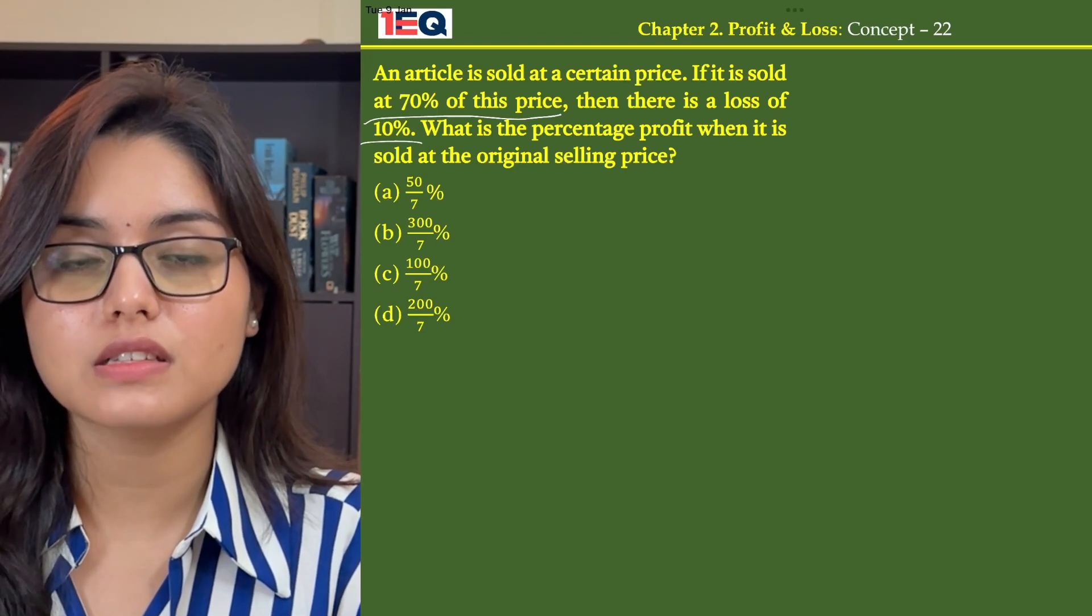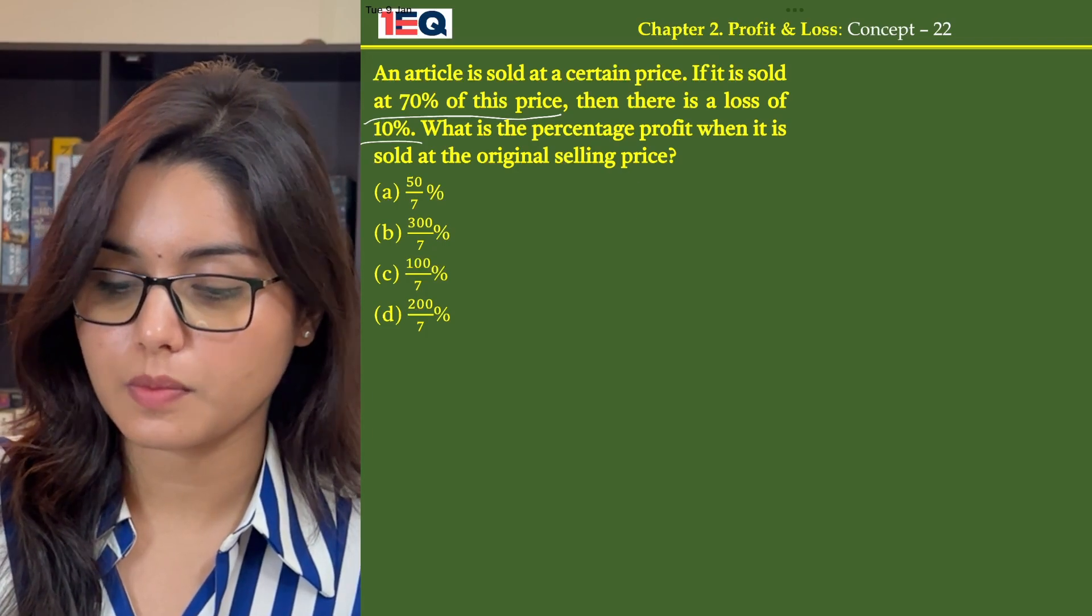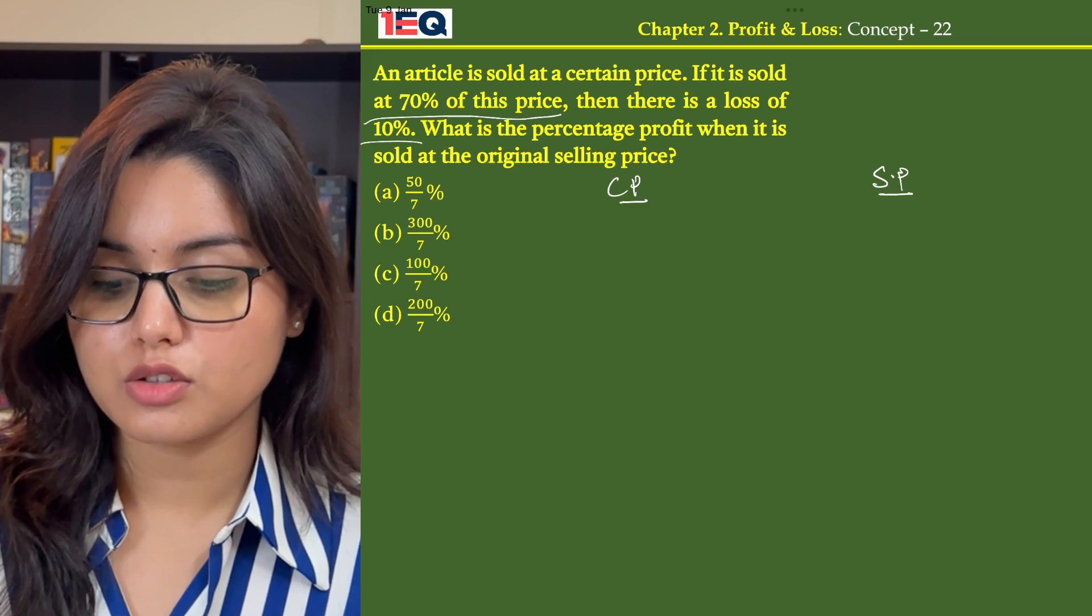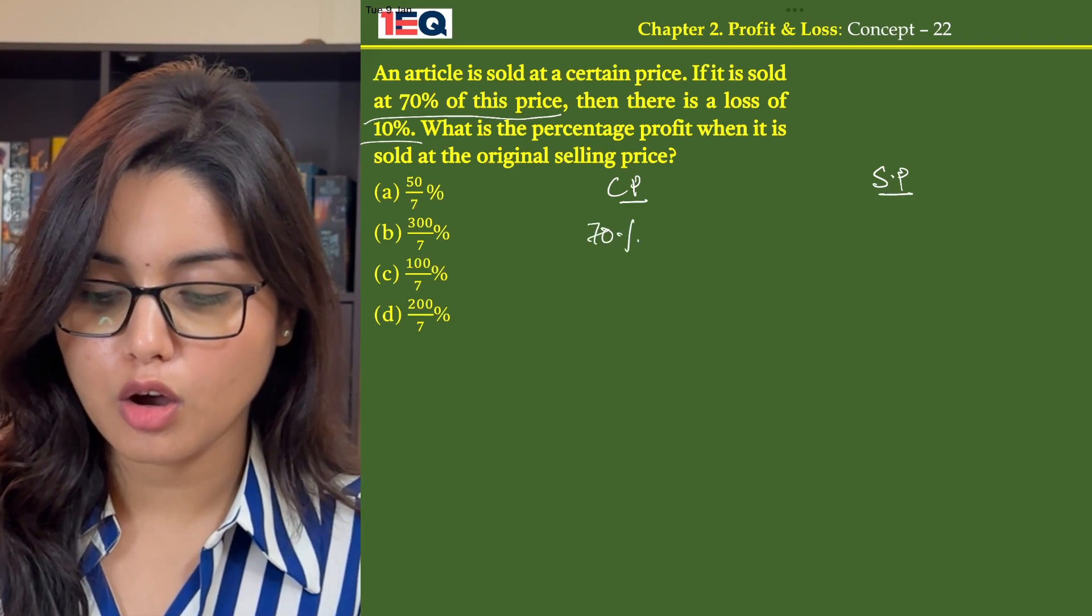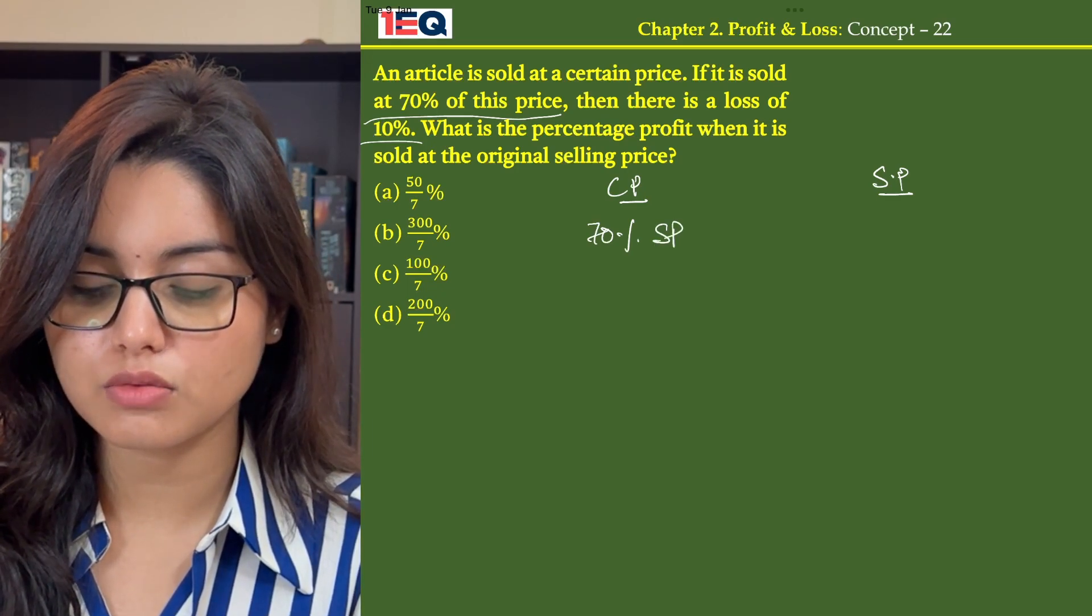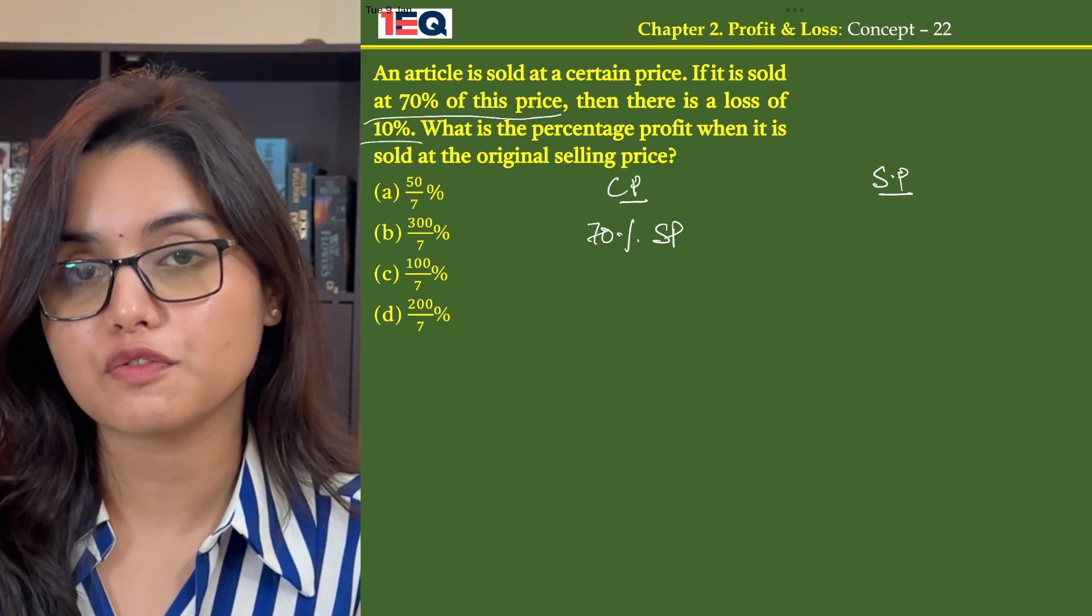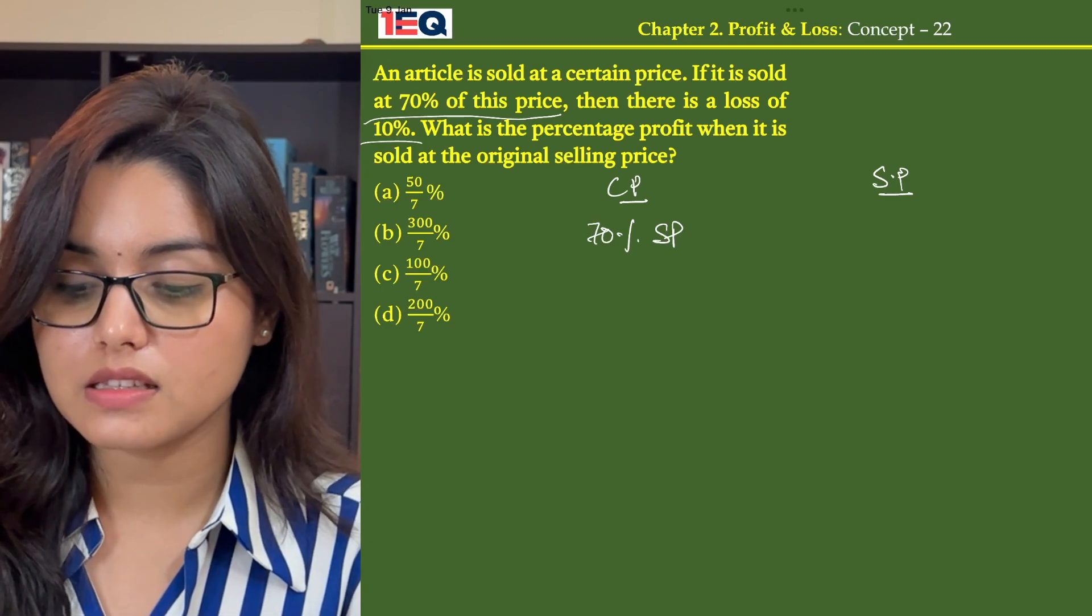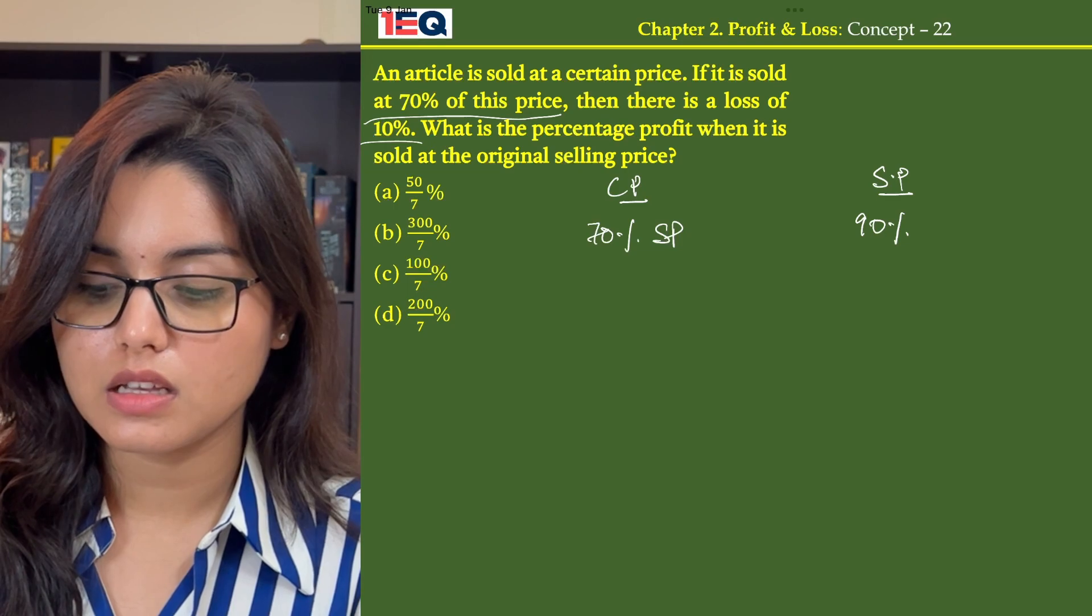Let the selling price and cost price be CP and SP respectively. My cost price will be 70% of SP because, as it is said, if it is sold at 70% of this price, so it is sold at 70% of that selling price and the selling price then becomes 90% of CP.